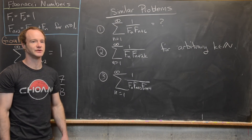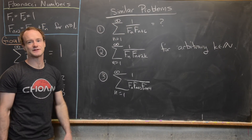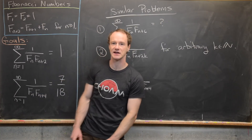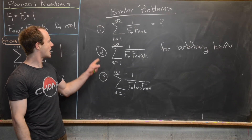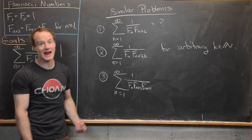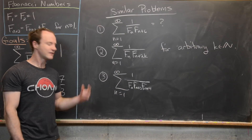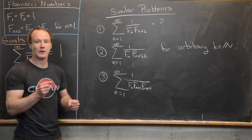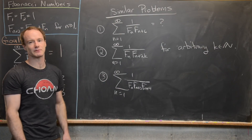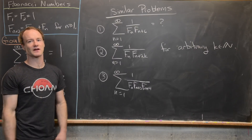Here are three similar problems to try using the same techniques. First, the sum from n=1 to infinity of 1/(f_n · f_{n+6}) — use partial fraction decomposition and the known sums. Second, the general sum 1/(f_n · f_{n+2k}) for arbitrary k — is there a nice closed formula in k? Third, can these methods handle a cubic denominator, such as 1/(f_n · f_{n+2} · f_{n+4})? Post what you find in the comments.